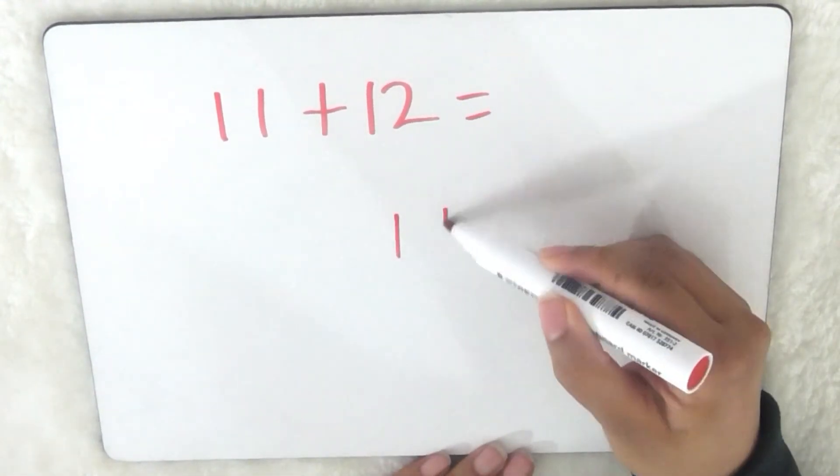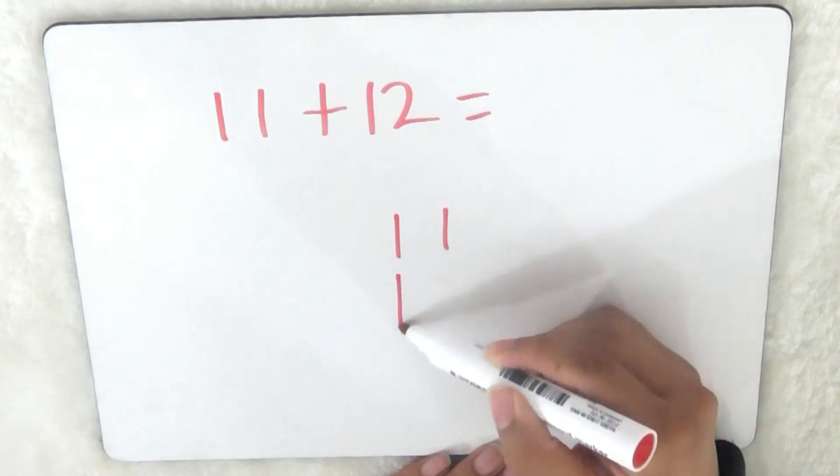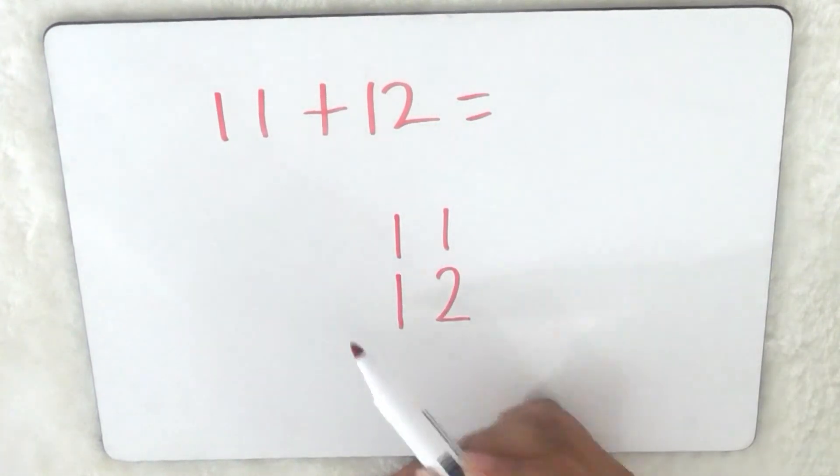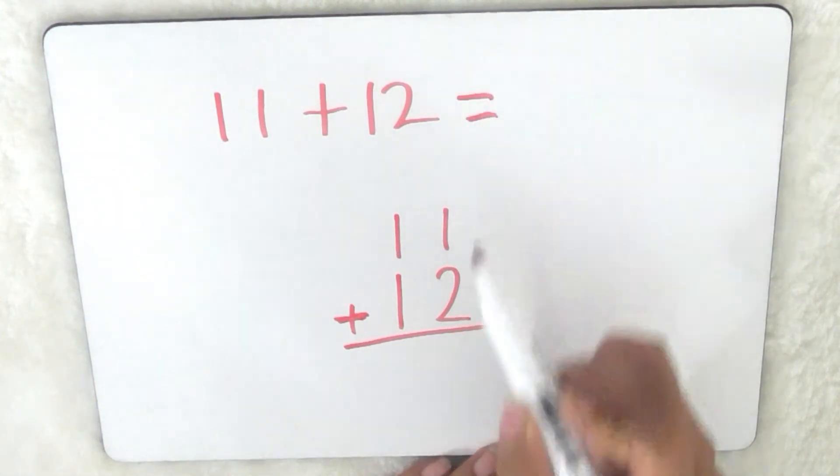You could write 11 and then right underneath it you write the 12, and then along the side of the tens you put the plus, and then rather than doing equals like this you do a line and that is the equals.